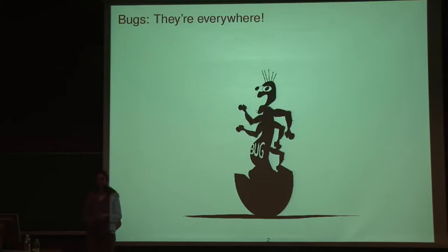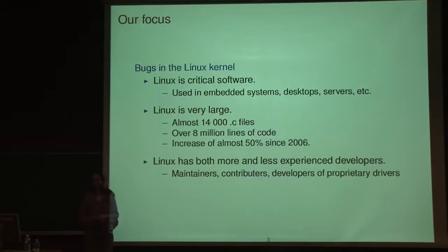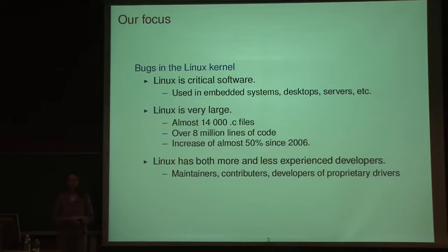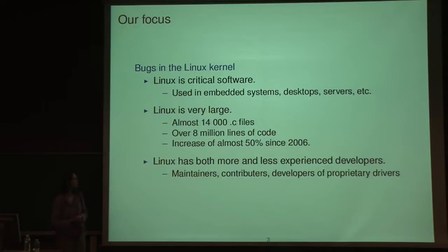Bugs are everywhere. What we're interested in particular is bugs in the Linux kernel. Linux is quite important software — it's used in all kinds of systems and it's also extremely large. There are over 14,000 C files. Earlier today Andrew Tenenbaum told us it was 6 million lines of code, but when I tested the most recent release it was 8 million lines of code. It's growing at quite a rapid rate — an increase of almost 50% since 2006.